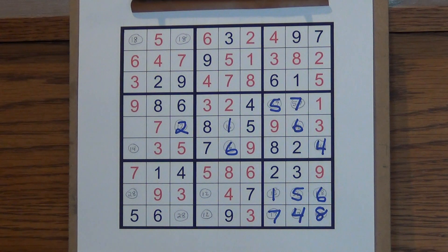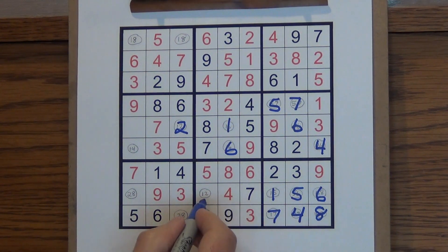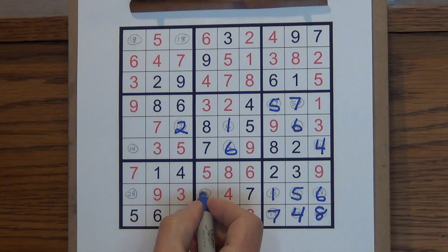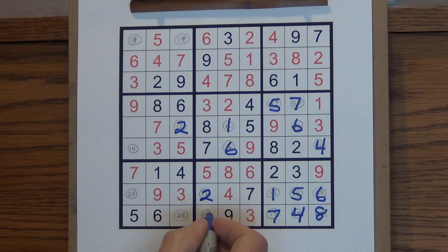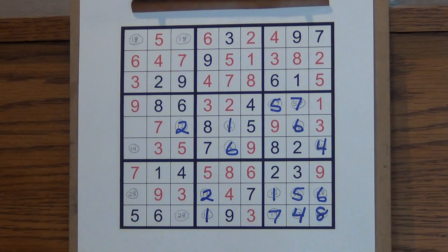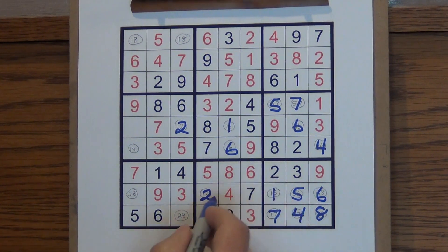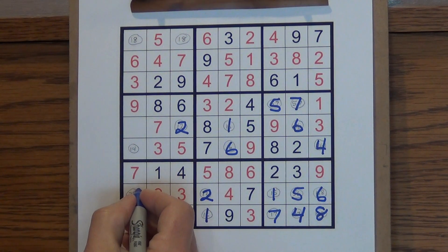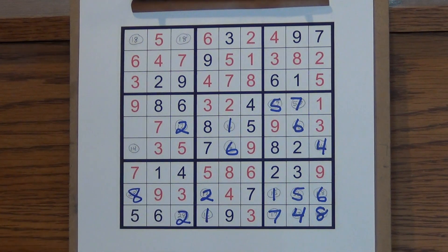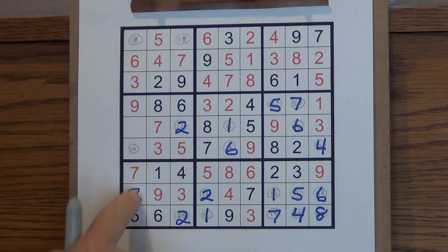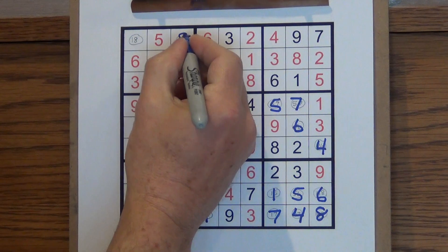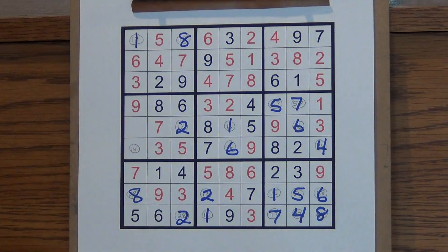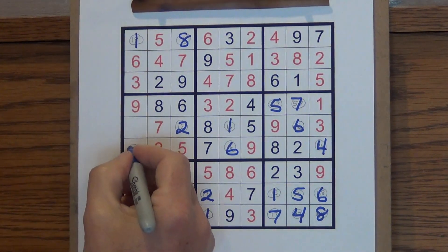This was a one so this one or two, this has to be a two which means this has to be a one. That tells me this has to be a two down here and that tells me this has to be an eight up here. So far so good. That tells me this is an eight so this must be a one. If this is a one this must be a four.